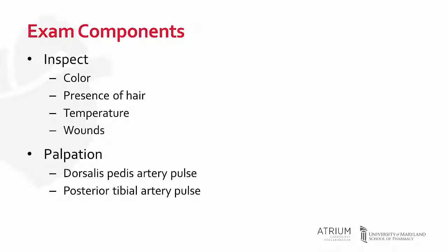Now let's review these elements. It's important when we are completing this exam that we do this on both the right and left side because we want to look for differences in the presence of these things between the two legs. The first thing we want to do is inspect. We want to look for differences in color in the lower extremity. We want to assess for the presence of hair. Is the hairline symmetrical? Do we notice that there is less hair growth on one extremity than the other? If we see that, that is not specific for peripheral arterial disease, but that could be a sign that there is decreased blood flow in the lower extremity that has less hair growth.